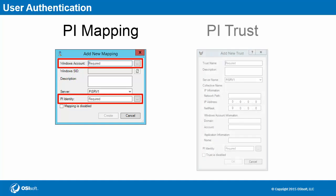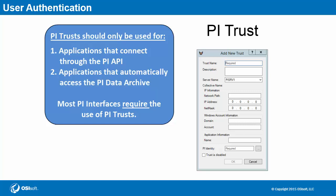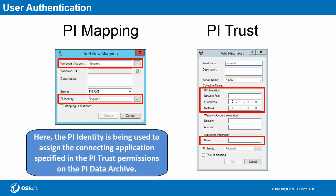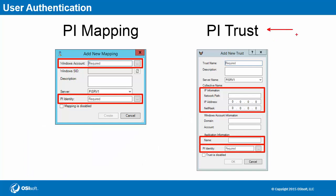On the other hand, there are also PI trusts. These aren't integrated to Windows Active Directory, as PI trusts are used mainly for allowing specific machines and applications access to the PI data archive. The best example is for PI interfaces running on remote nodes. You'd create a PI trust that associates the machine via machine name or IP address and the PI interface with the required PI data archive resources via PI identity. In summary, OSIsoft recommends to reserve PI trusts only for unattended applications, like a PI interface, while user access should be granted by PI mappings.